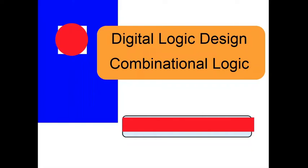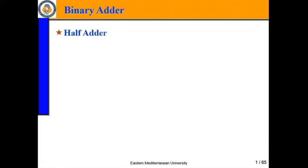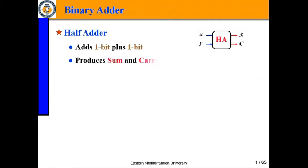Starting with the name of Allah, the most gracious and the most merciful. Today we are going to start another topic in chapter number 5, that is combinational logic. We have already seen what combinational logic is. Today we will learn about the half adder. So what happens in a half adder?